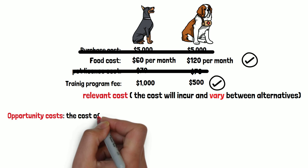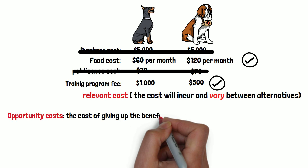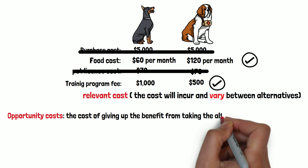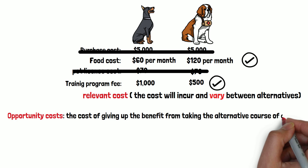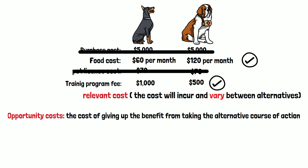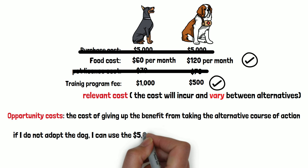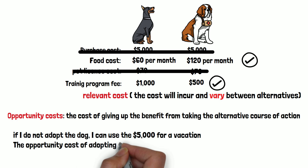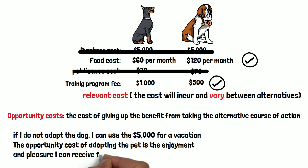Opportunity cost is the cost of giving up the benefit you can obtain from taking the alternative course of action. So if I don't adopt the dog, I can use the $5,000 for a vacation. The opportunity cost for adopting the dog is the enjoyment and pleasure I could receive from that vacation.